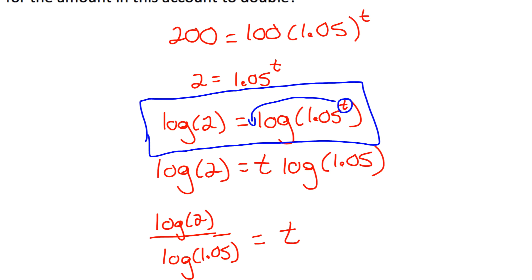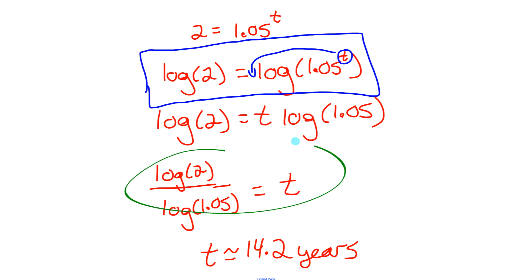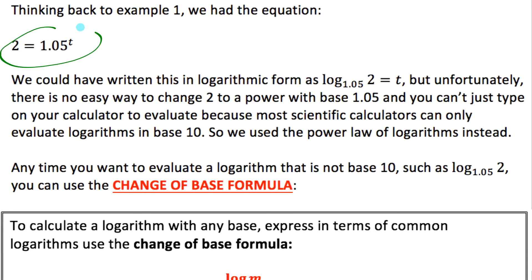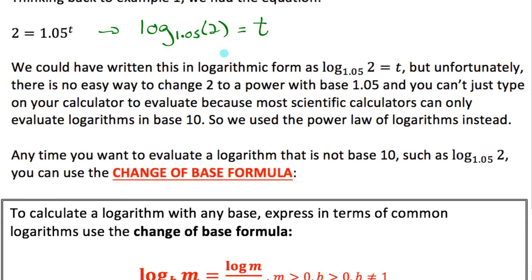Let's shift back to example one. Looking at that equation, there's a much faster way to solve it — we could have just rewritten the exponential equation in logarithmic form right away: log base 1.05 of 2 equals t. These two equations mean the exact same thing. In logarithmic form, t is the exponent that goes on the base 1.05 to get the argument 2, which is exactly what this represents.